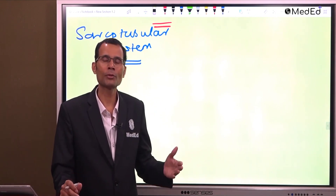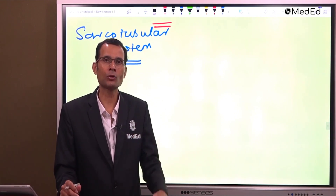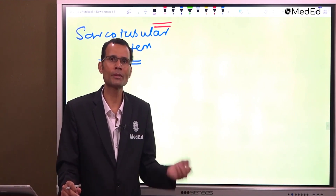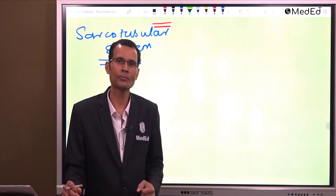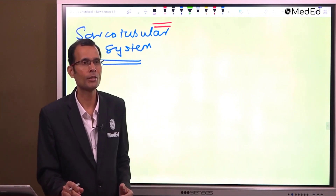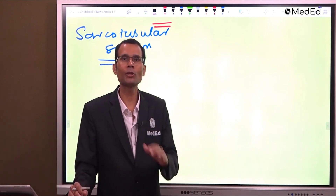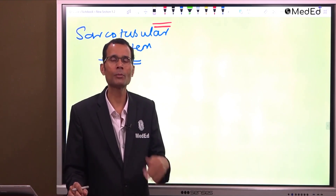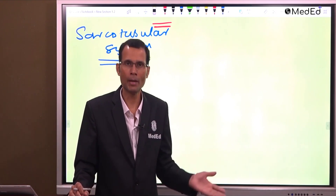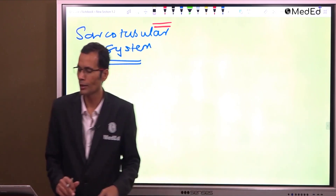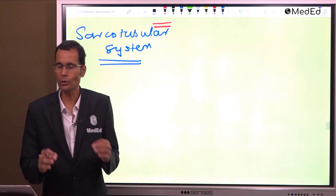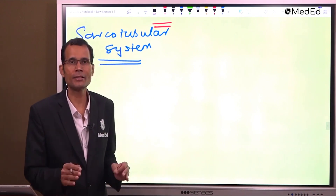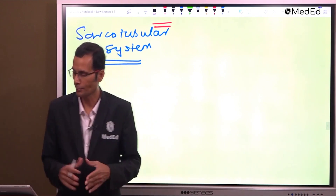Later on, we will say sarcoplasm — the cytoplasm of the muscle fiber. Sarcolemma means the muscle fiber membrane. So, sarco-tubular system means the system of tubules in the muscle.